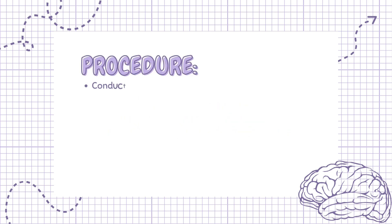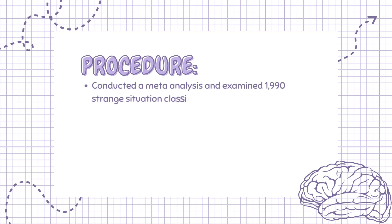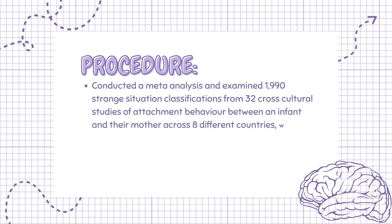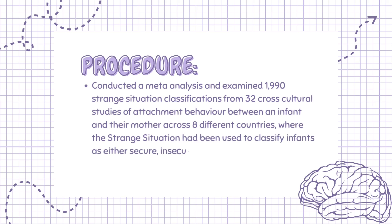They conducted a meta-analysis and examined 1,990 strange situation classifications from 32 cross-cultural studies of attachment behavior between an infant and their mother across 8 different countries, where the strange situation had been used to classify infants as either secure, insecure-avoidant, or insecure-resistant.